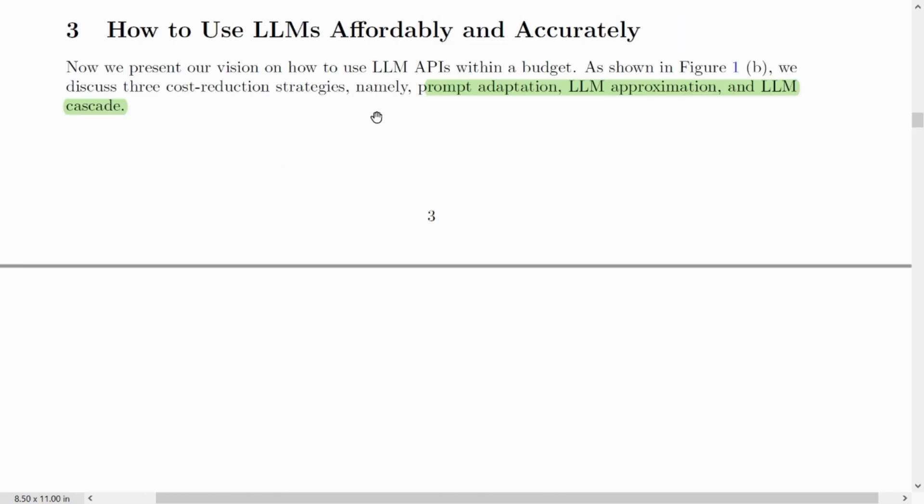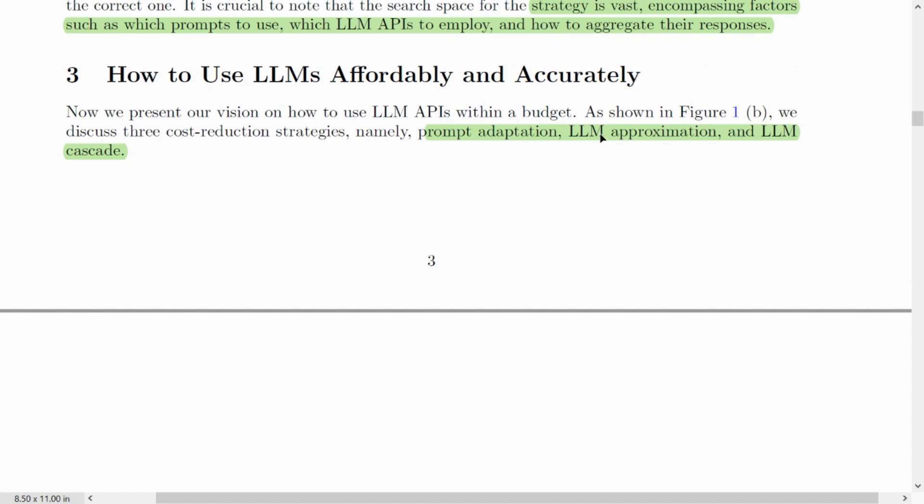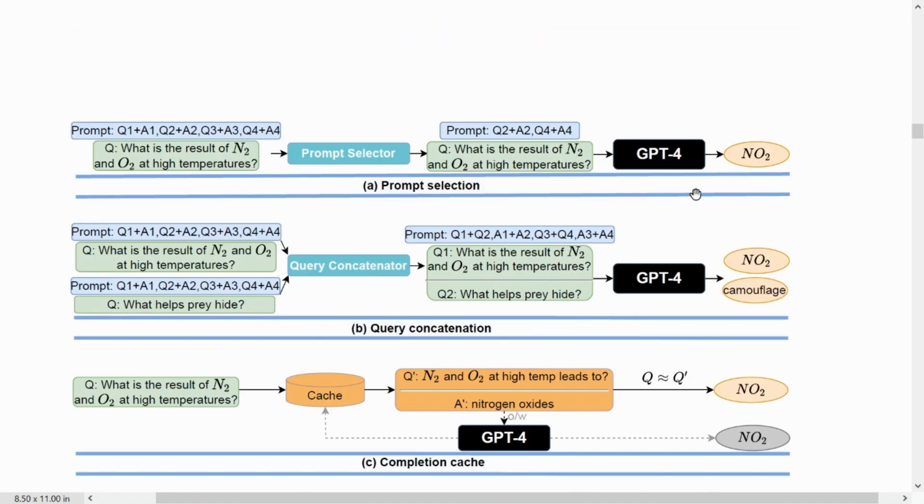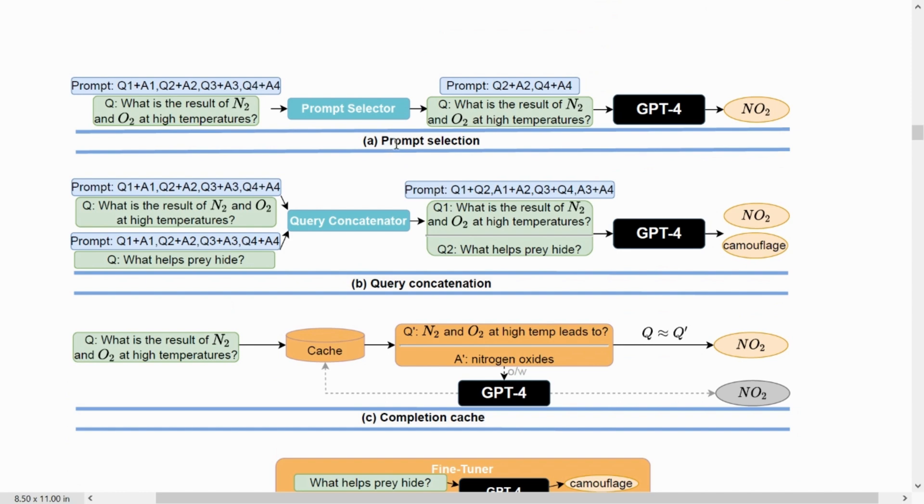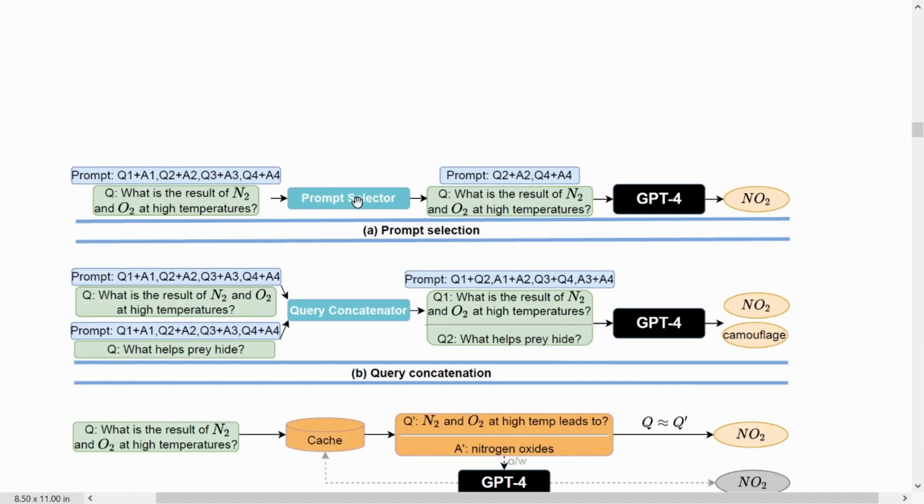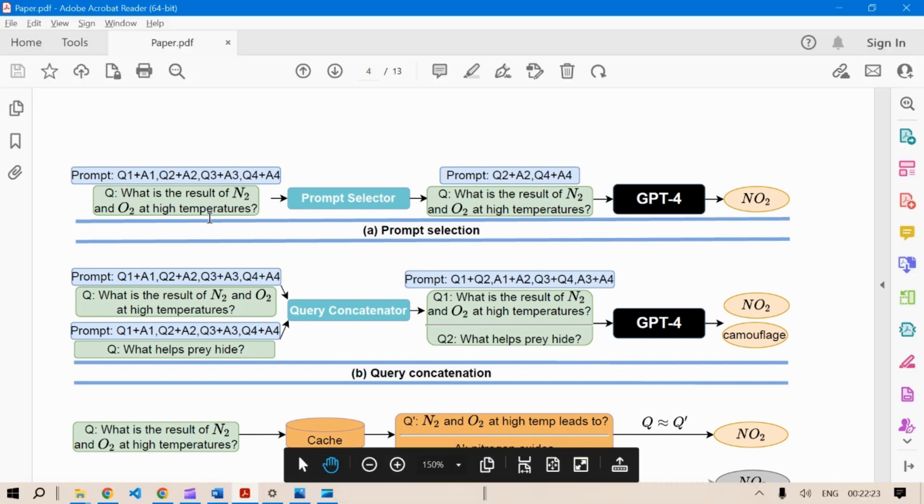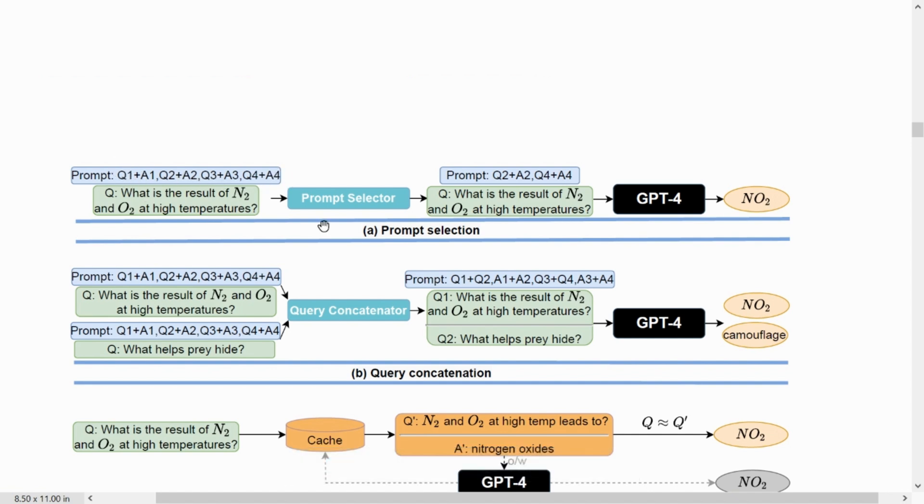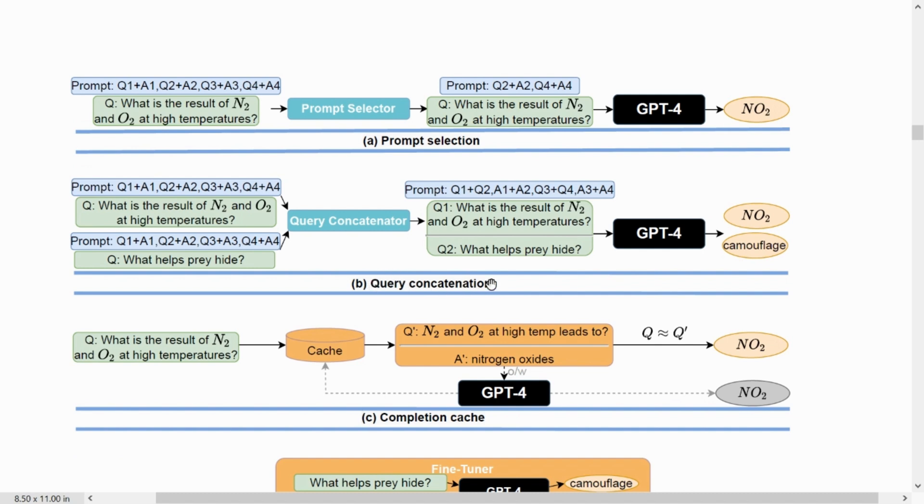We have basically three strategies that can be used to reduce the cost. The first strategy is prompt adaptation, the next is LLM approximation, and the third is LLM cascading. Here are the five strategies. The first is prompt selection, next one is query concatenation. These two strategies fall under the category of prompt adaptation because the prompts are adapted here. The prompts are shortened and minimized. For example, in the prompt selection, if we give a prompt with four question and answers, we can modify the prompt to contain only two question and answers because the methodology decides that only those two are relevant in this context. So here we are reducing the size of the prompt. Another example, query concatenation. We have two different questions with two prompts with four different examples of Q&A for the two prompts. In this case, we can combine the two questions together and give only two sets of questions and pass it to a GPT and get the answer.